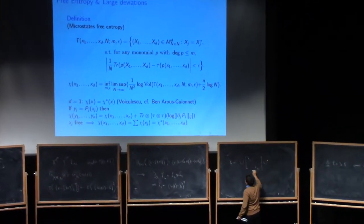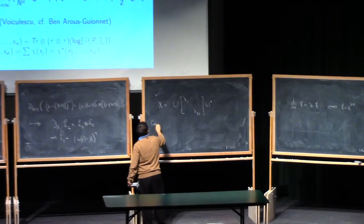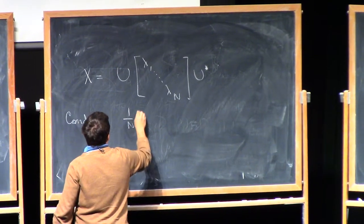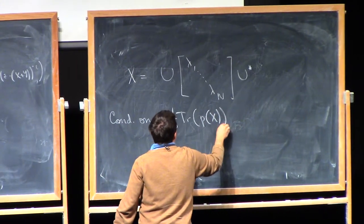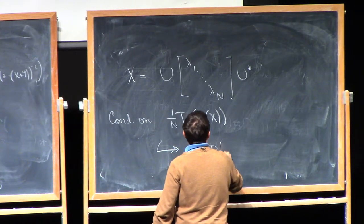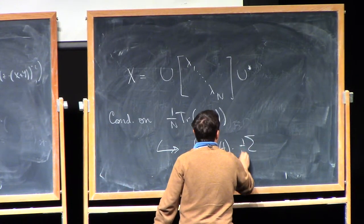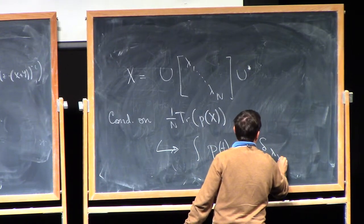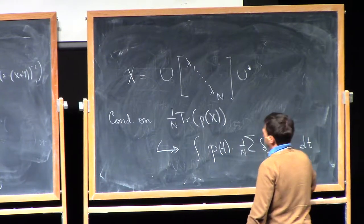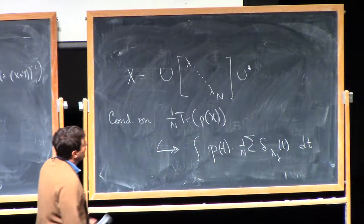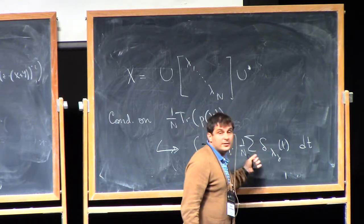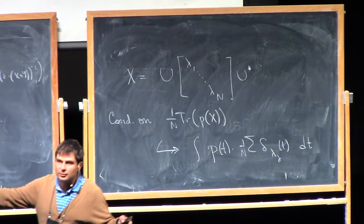U star, then the conditions on things like the normalized trace of a polynomial of x become conditions on the integral of this polynomial against the measure of the delta masses at the eigenvalues. So more or less, you're prescribing the moments of this measure, so you're fixing where these eigenvalues are going to be.